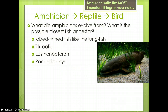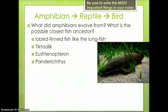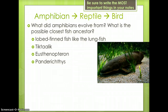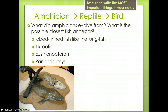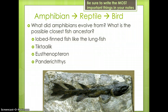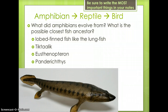Scientists believe that amphibians evolved from lobed-finned fish, like the lungfish shown here. Scientists do not all agree on the possible closest fish ancestor. However, some possibilities include Tiktaalik, Eusthenopteron, and Panderichthys.